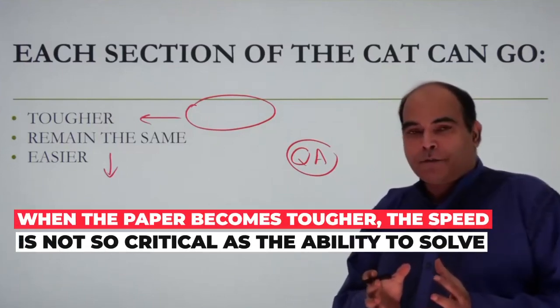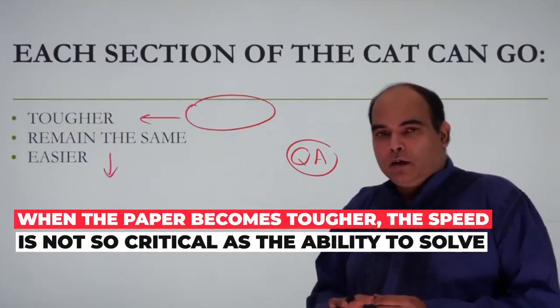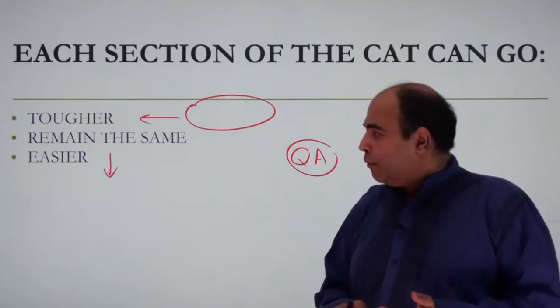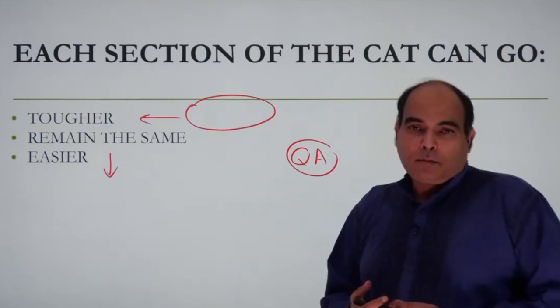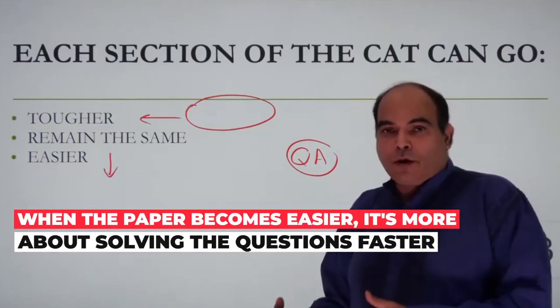When the paper becomes tough, speed is not so critical as the ability to solve. Whereas in an easier paper, when the questions are very easy, then it's about: you solve 18, I solve 24—it becomes a speed issue. I was much faster than you.